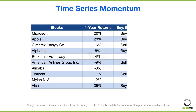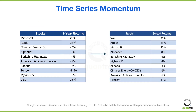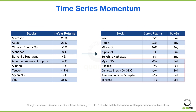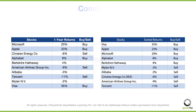In cross-sectional momentum, you rank all stocks in a portfolio in descending order based on the returns over one year. You buy the top five stocks and sell the bottom five stocks.